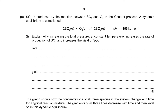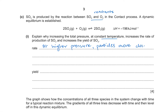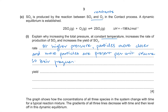The question states that SO3 is produced by the reaction between SO2 and O2 in the contact process, and a dynamic equilibrium is established. We are asked to explain why increasing total pressure at constant temperature increases the rate of production of SO3. At higher pressure, particles are closer together and more particles are present per unit volume, so their frequency of successful collisions increases, and when they collide more frequently per unit time they produce more product.